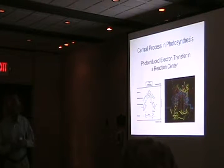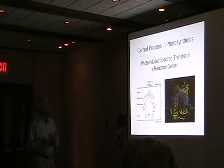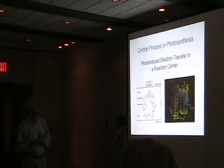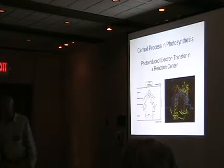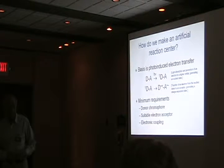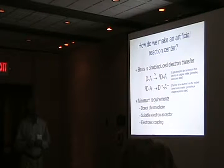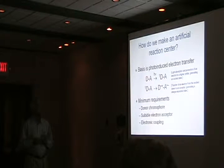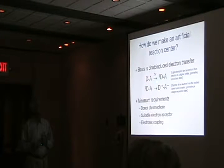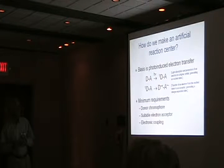I want to talk about two things. The first is the central process that goes on in photosynthesis, namely the reaction center, which Bob has done a good job of introducing. The basis is photo-induced electron transfer. If we want to make an artificial system that does this, we need some sort of molecule to absorb the light and generate an excited state. We work with excited singlet states because they're higher energy than triplet states, giving more potential for preserving light energy as electrochemical potential. We have to do an electron transfer reaction to generate a charge-separated state, converting excitation into electrochemical energy.